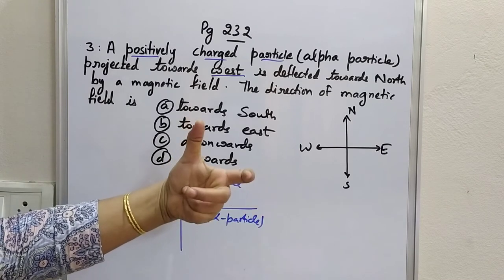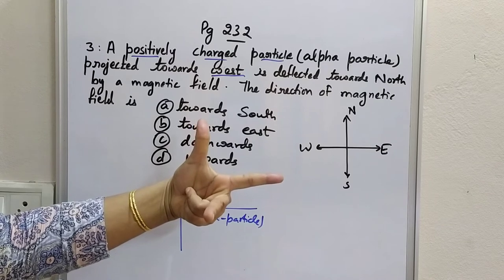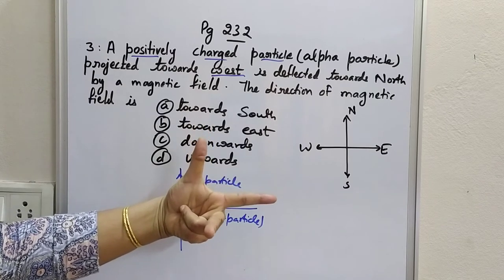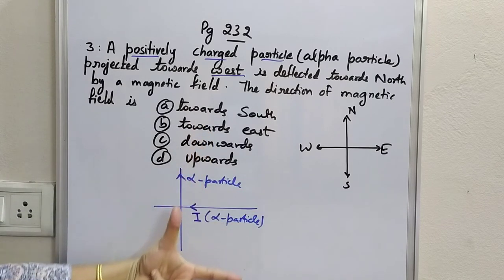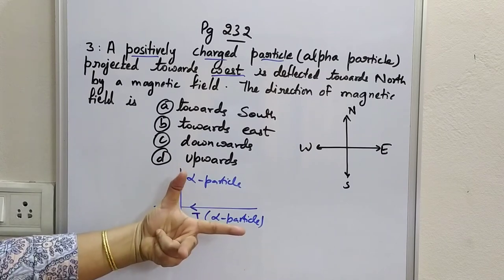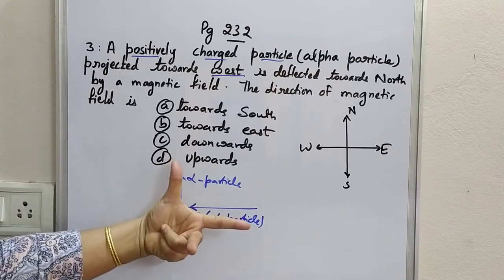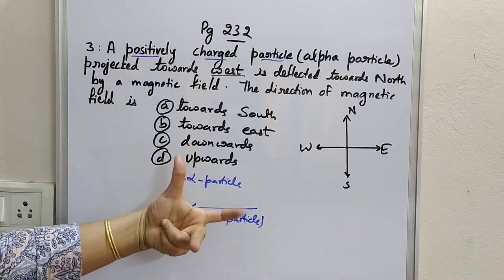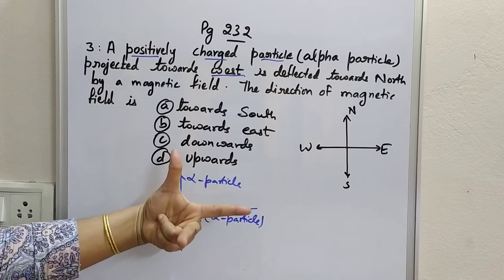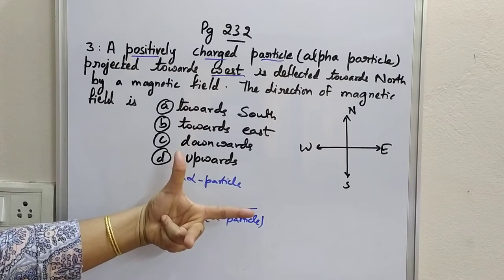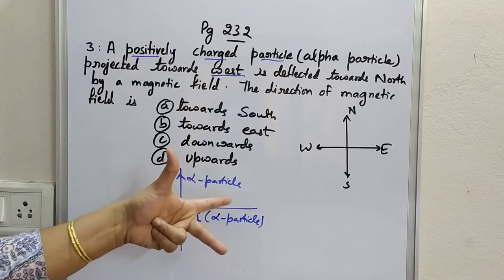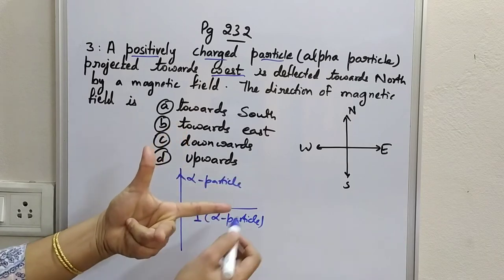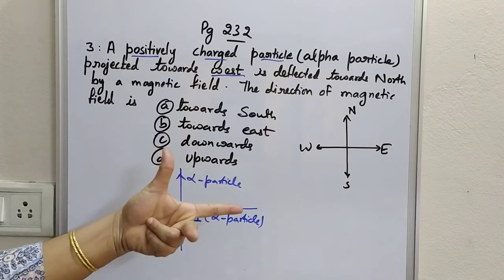The first three fingers have to be stretched at mutual right angles to each other. Force — it is deflected towards north, so the direction of the thumb is known. The magnetic field direction we need to find, meaning the forefinger direction. The direction of current is given to us — it is towards the west.